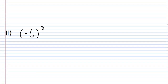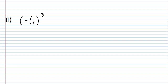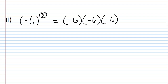For part two we have (-6) cubed. The exponent is odd, so we know we're going to have a negative answer. We have negative 6 times negative 6 times negative 6 — three factors of negative 6. Three negatives multiplied together give a negative result. Six times six is 36, times 6 is 216, so the answer is negative 216.